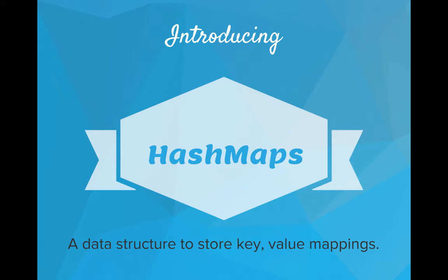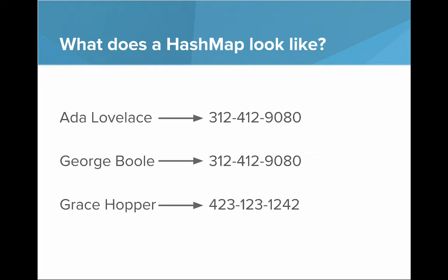Introducing HashMaps, a data structure to store key value mappings. So what does a HashMap look like? A HashMap really looks something like this, where you have some value on the left, and it's connected to some other value on the right.